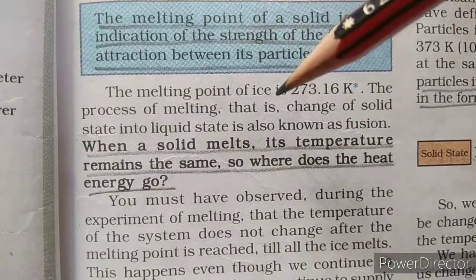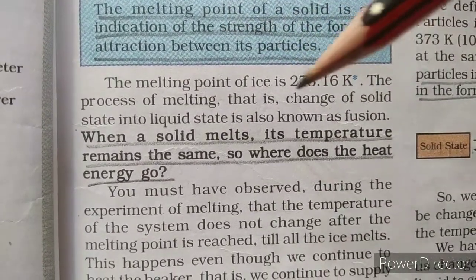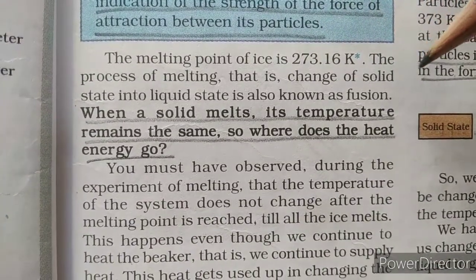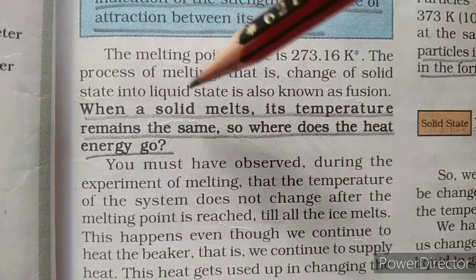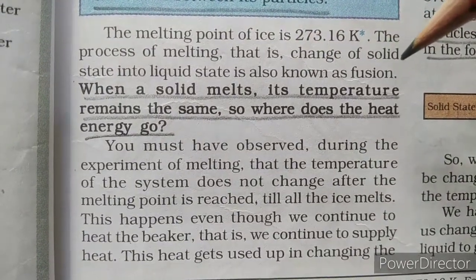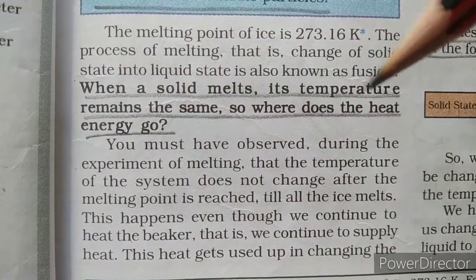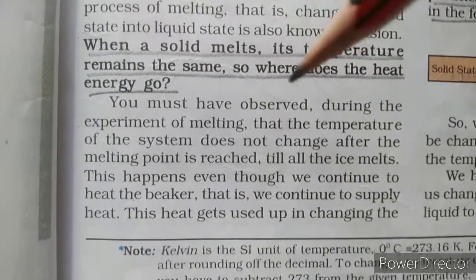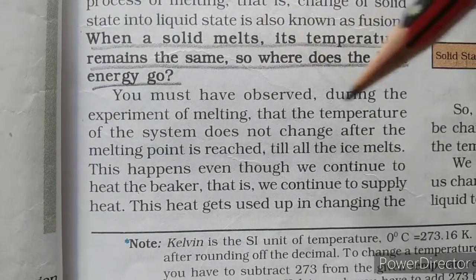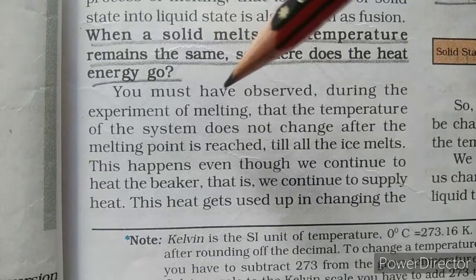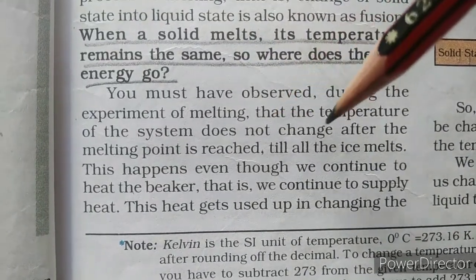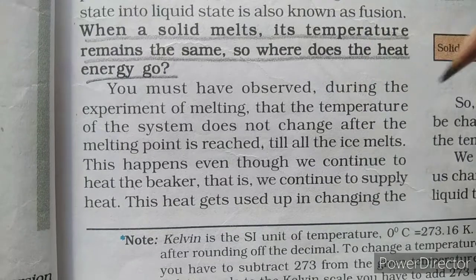The process of melting — that is, the change of solid state into liquid state — is also known as fusion. When a solid melts, its temperature remains the same. Where does the heat energy go? During the experiment, the temperature of the system does not change after the melting point is reached, until all the ice melts.